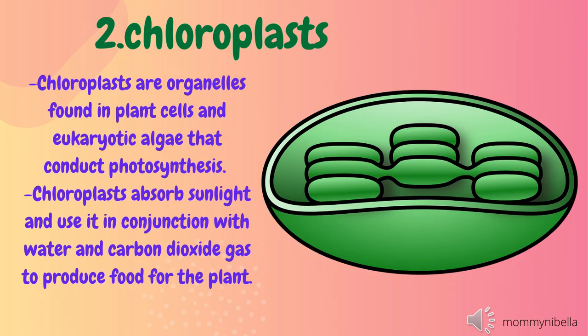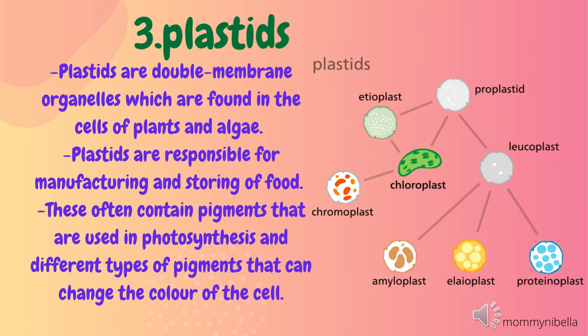Number two: chloroplast. Chloroplasts are organelles found in plant cells and eukaryotic algae that conduct photosynthesis. Chloroplasts absorb sunlight and use it in conjunction with water and carbon dioxide gas to produce food for the plant.